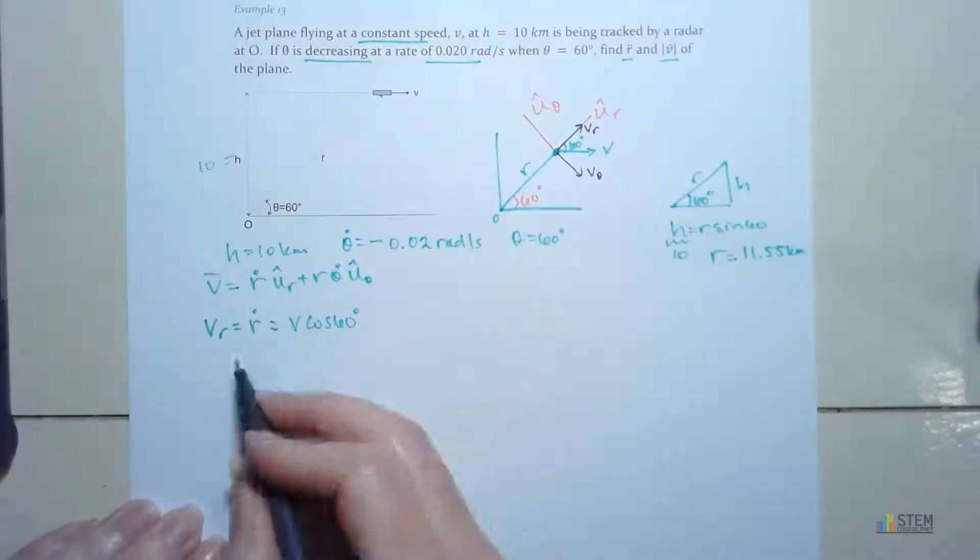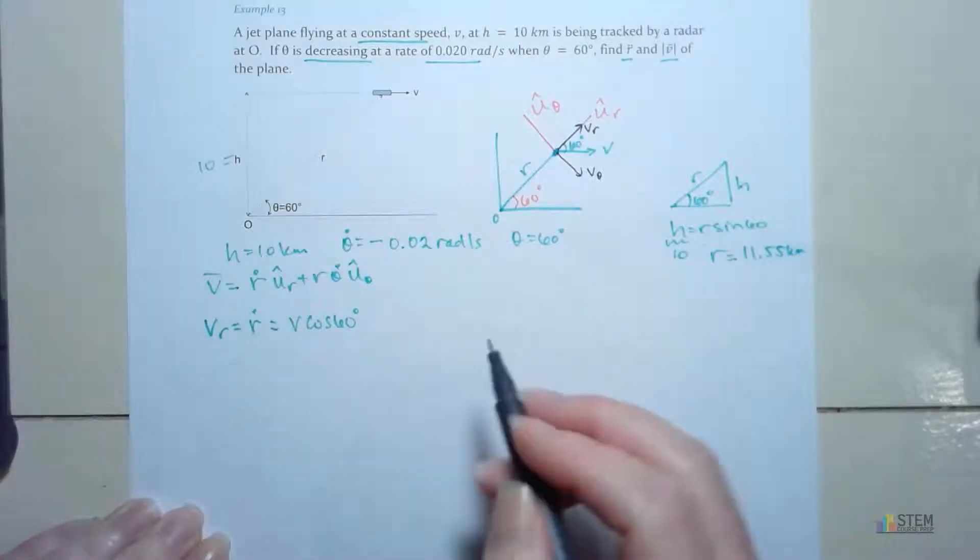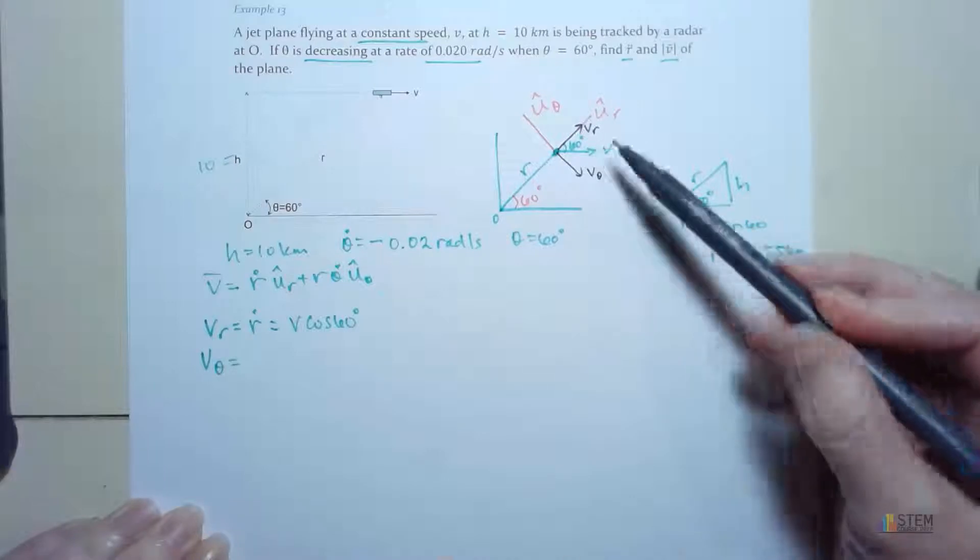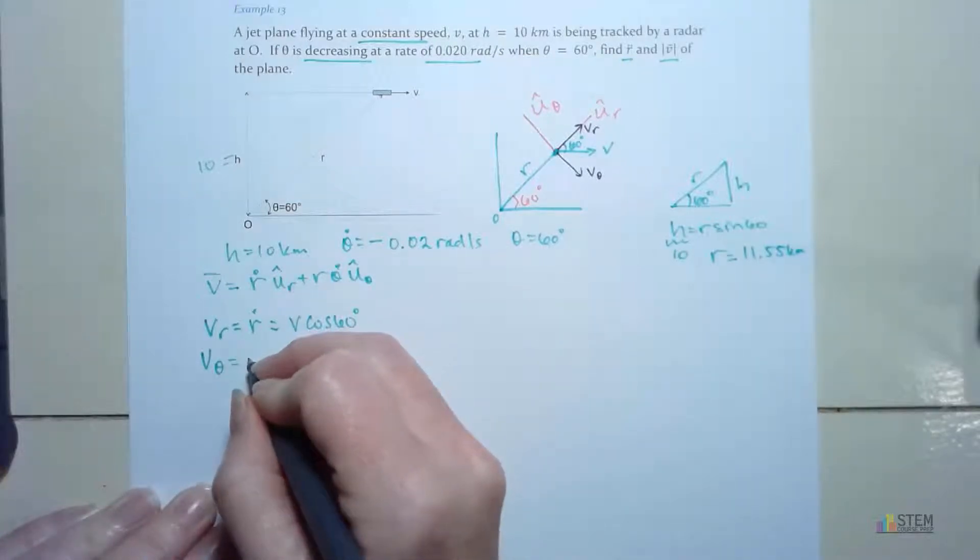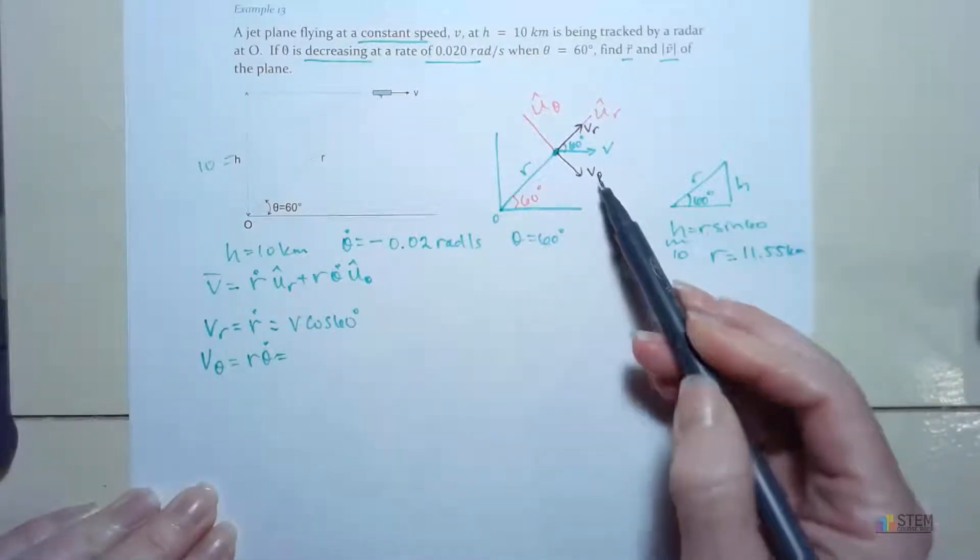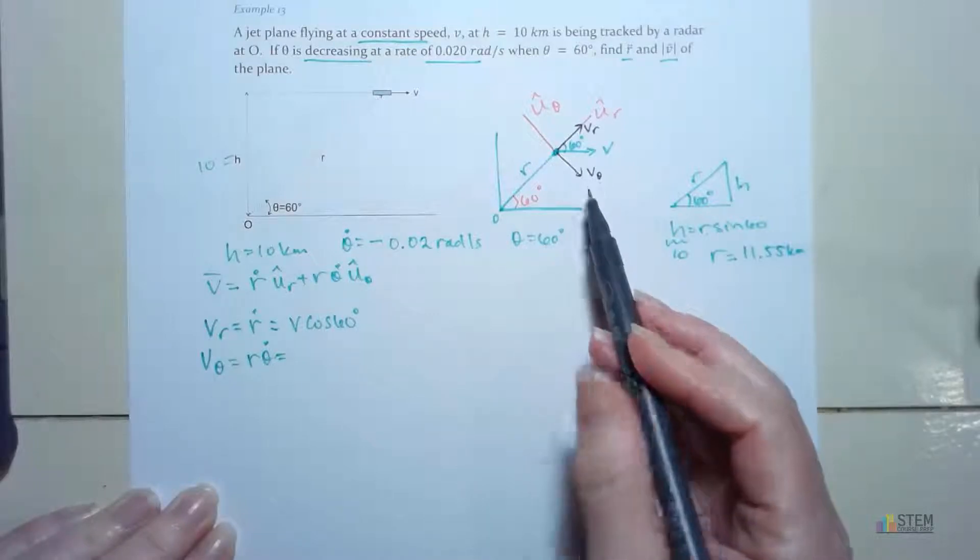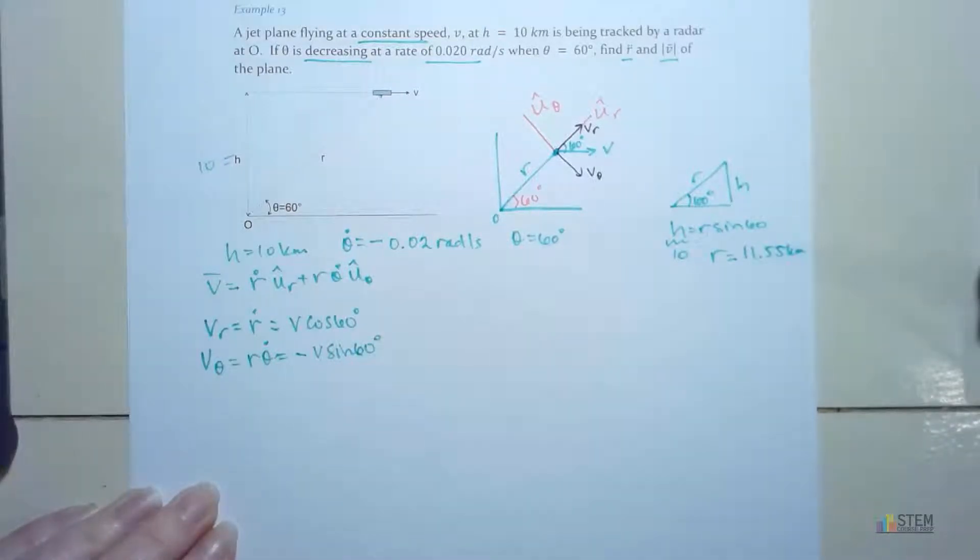So now we've got this. Now, I still can't really do anything with this because I don't know R dot, and I'm trying to find V, so I can't really use this yet. So now let's go ahead, let's look at V theta. The theta component, if you look, that's going to be this opposite side, so it's going to be V sine theta. And we'll write that in just a second. Before I do that, let's write this down first. So we've got this R theta dot, and then that, like we said, is going to be the V sine theta, but now look at the direction. This is in the negative direction, right? So we're going to have negative V sine theta, which is 60 degrees. So now we are at this point.